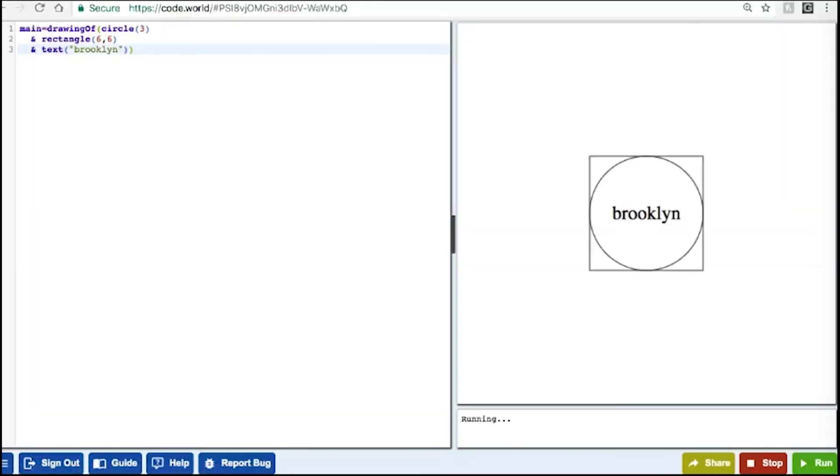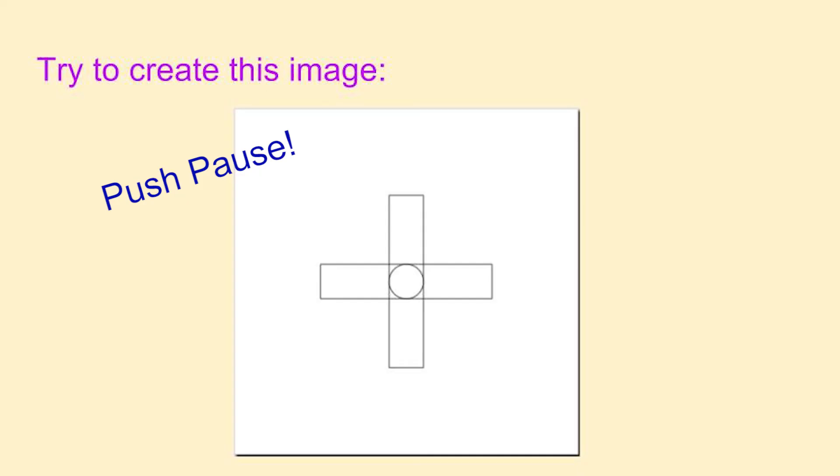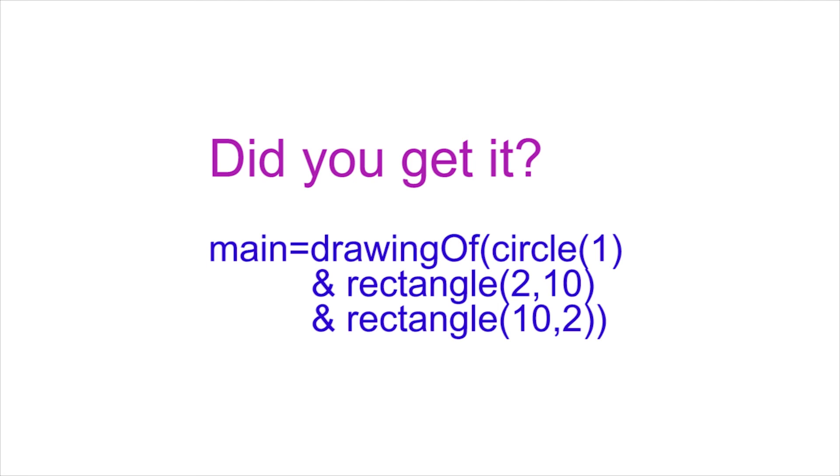Here's a challenge for you. Try to create the image on the screen exactly like it is. Push pause and resume the video when you're ready. Did you get it? It's main equals drawing of a circle with a radius of 1, ampersand, a rectangle with a width of 2 and a height of 10, and another rectangle with a width of 10 and a height of 2.